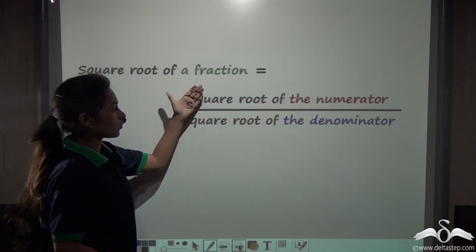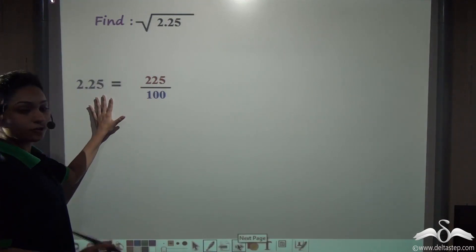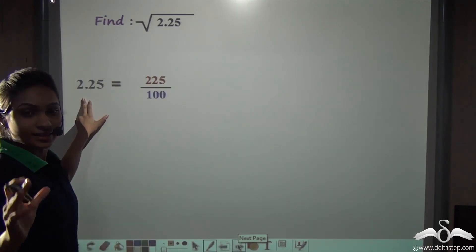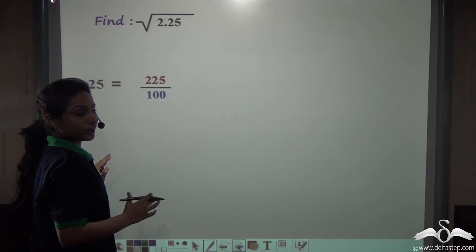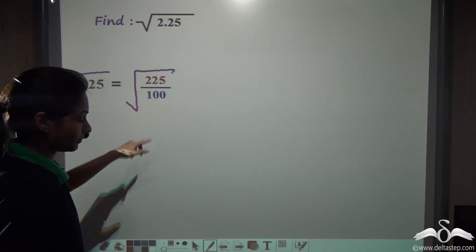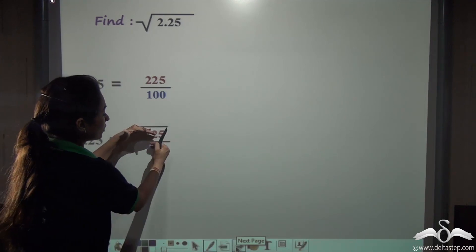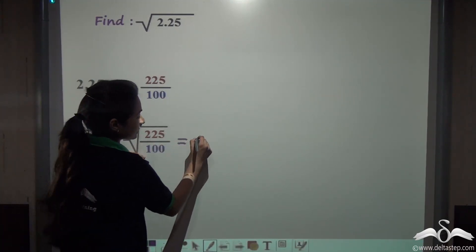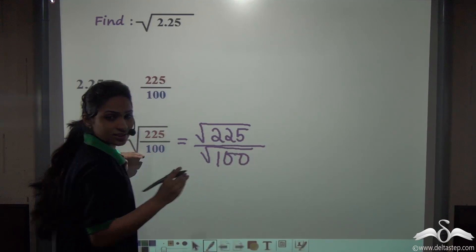The square root of a fraction is the square root of the numerator over the square root of the denominator. So here we have converted 2.25 into the fraction 225 over 100. Putting the square root sign on both sides, we can write this as the square root of 225 divided by the square root of 100 — just as we do in the case of fractions. Now find the prime factors of 225 and 100.